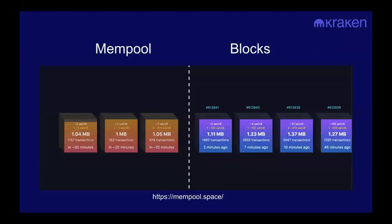There are two big variables: the total transaction fee, and the total size in bytes of your transaction — which depends on how many inputs and outputs you have. Miners look at the fee rate, and whoever is paying the highest fee rate gets into a block the fastest. You can go to the website mempool.space and see this visualization in real time — how many transactions are getting into blocks, the size of blocks, and the fee rate for transactions waiting to get into blocks.